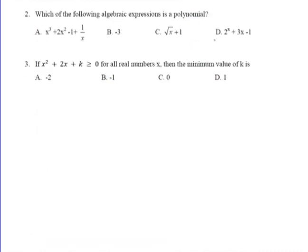Number 2: which of the following algebraic expressions is a polynomial? Choice A cannot be the answer because 1 over x means x is to the power of minus 1. So A cannot be the answer.